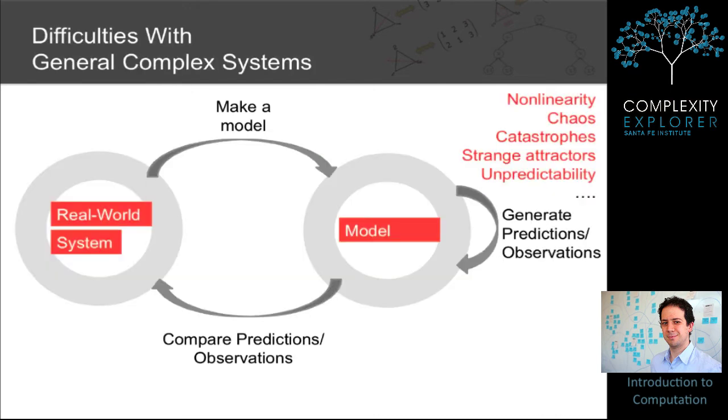In studying general complex systems, research typically proceeds in the following fashion. This is somewhat of a caricature, but it serves to get the point across. There's typically a real world system that you're interested in studying. You have to make a model of that system. You have to study the mathematical model to generate predictions or observations or other ideas, and then compare those predictions or observations with the real world system and iterate. Each of these three aspects of the research, making the model, generating the predictions or observations, and comparing the predictions or observations with the real world system is fraught with difficulty.